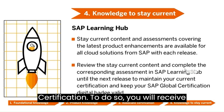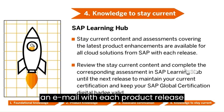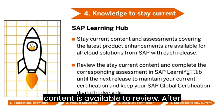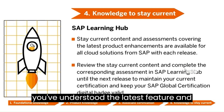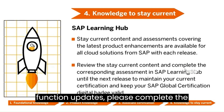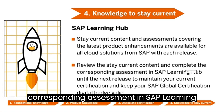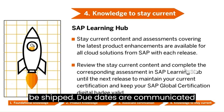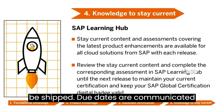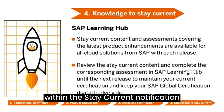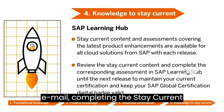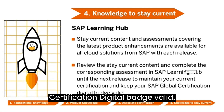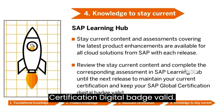To do so, you will receive an email with each product release informing you that new stay current content is available to review. After you've understood the latest feature and function updates, please complete the corresponding assessment in SAP Learning Hub until the next product release will be shipped. Due dates are communicated within the stay current notification email. Completing the stay current assessment will also keep your SAP Global Certification digital badge valid.